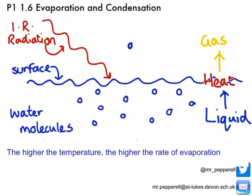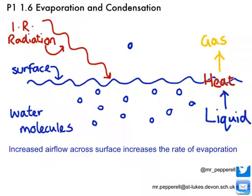Finally, there's one more factor. If there's a breeze across the puddle, the water molecules are carried away and there's less chance of them condensing back into the puddle, losing their energy and returning to their liquid state. So increased airflow across the surface increases the rate of evaporation.